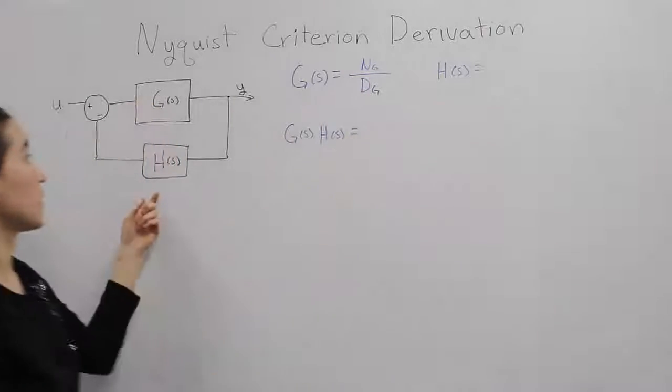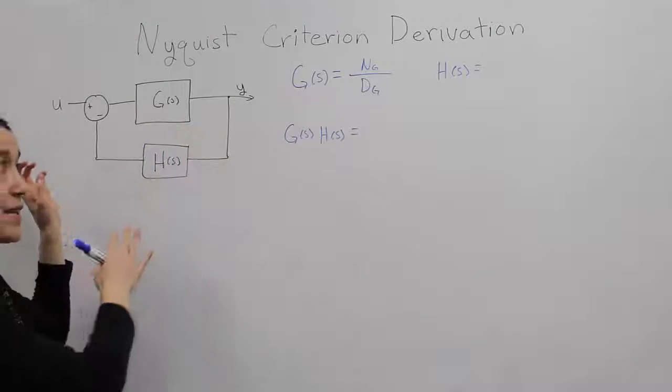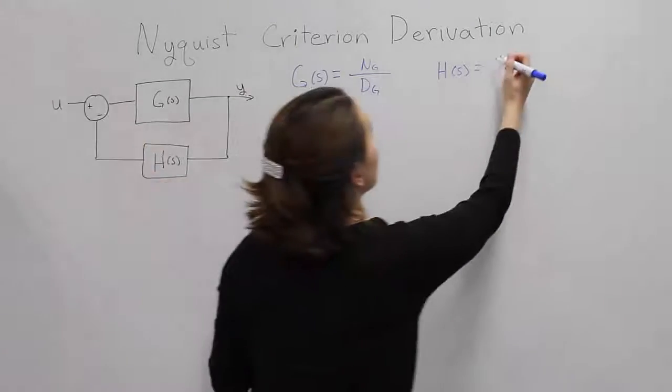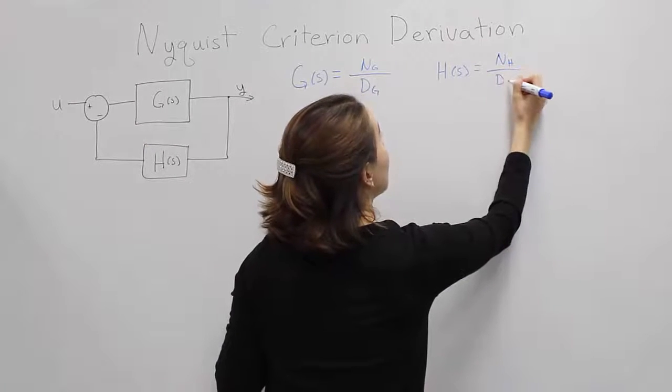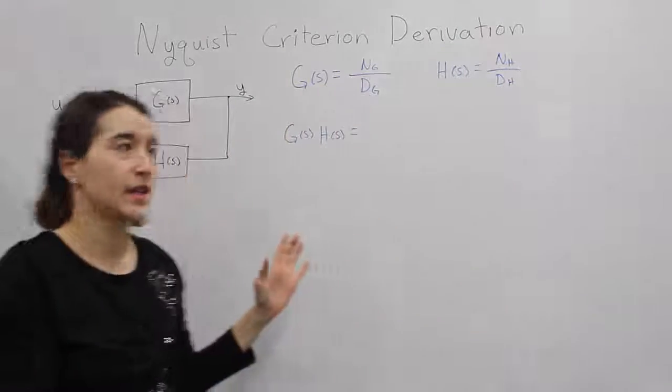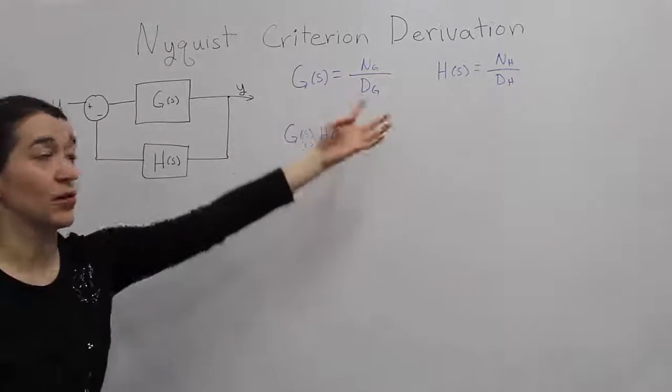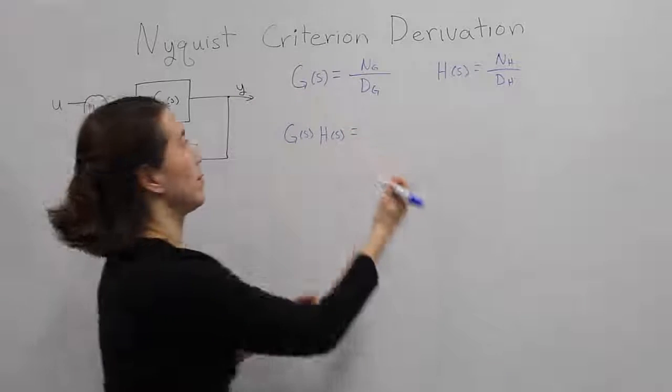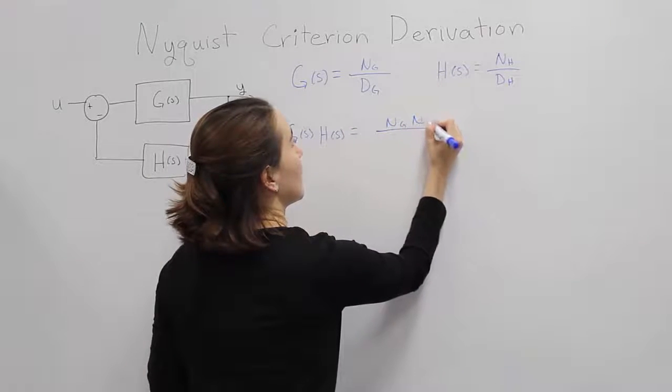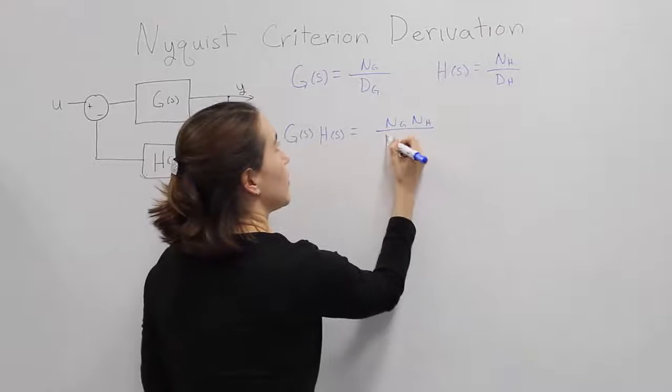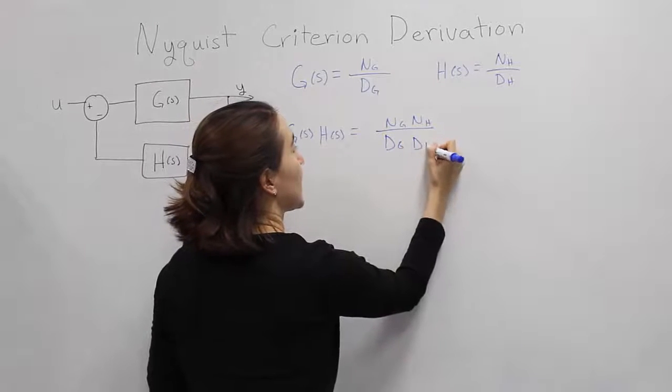The same can be true for this H if we have some sort of feedback system here, some sensor. Then we would say n, numerator of H, and the denominator of H. If we need to multiply these two terms together, simply multiply them, and we would get the numerators times each other, divided by the two denominators multiplied by each other.